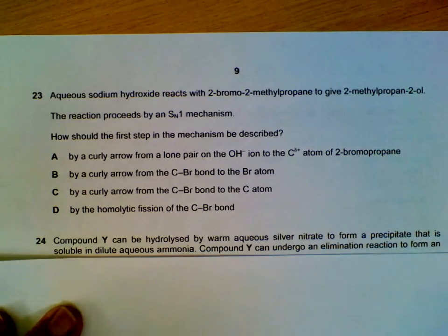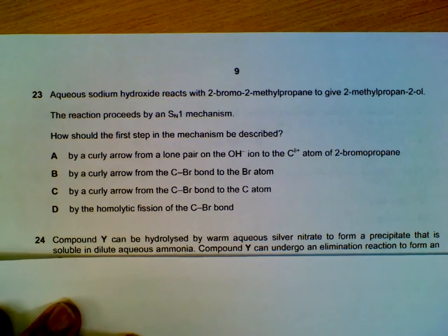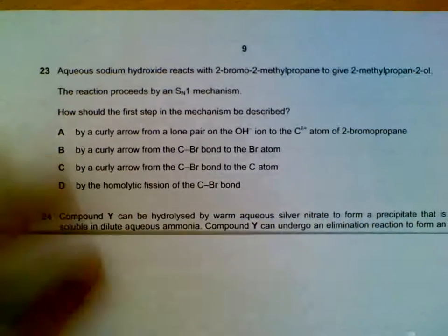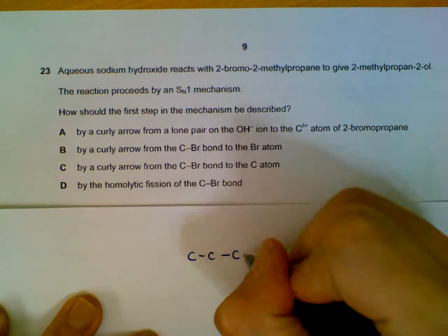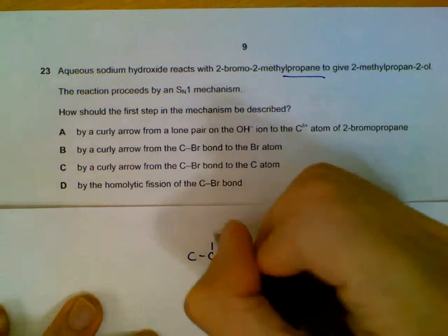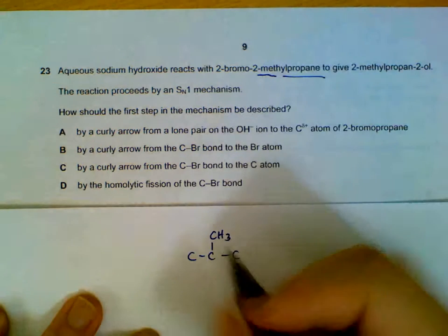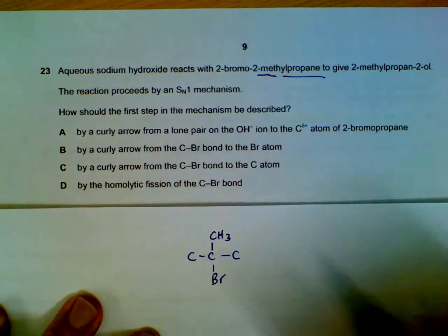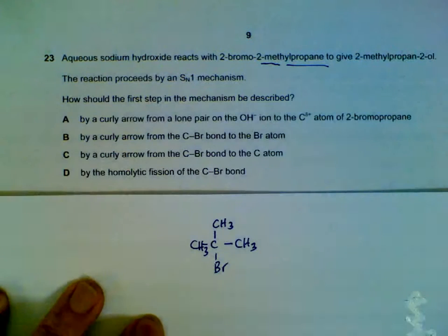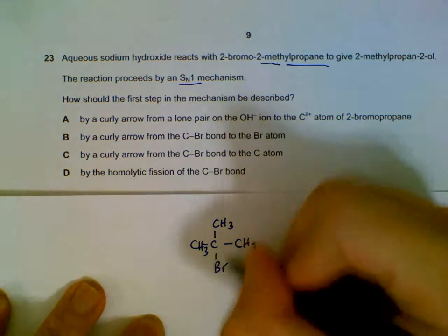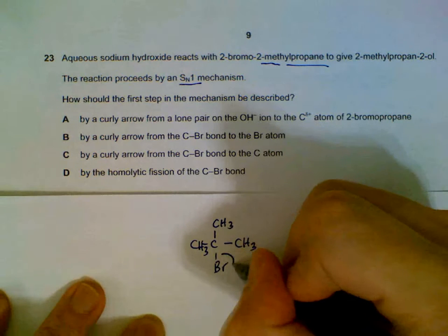Sodium hydroxide reacting with 2-bromo-2-methylpropane by SN1 reaction. So how should the first step be described? Well, I will draw out the structure - propane. There is a methyl group attached on the second carbon, and there is a bromine attached on the second carbon also. So we have this structure. This is a tertiary haloalkane, so no surprises that it undergoes SN1 mechanism. What it means is basically before we can replace this bromine, the bond has to be broken first.